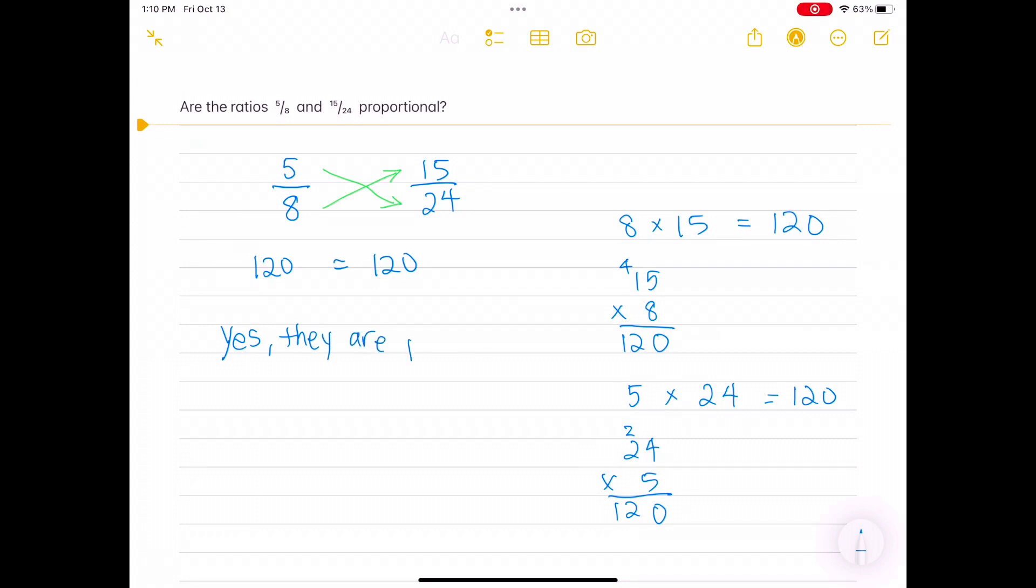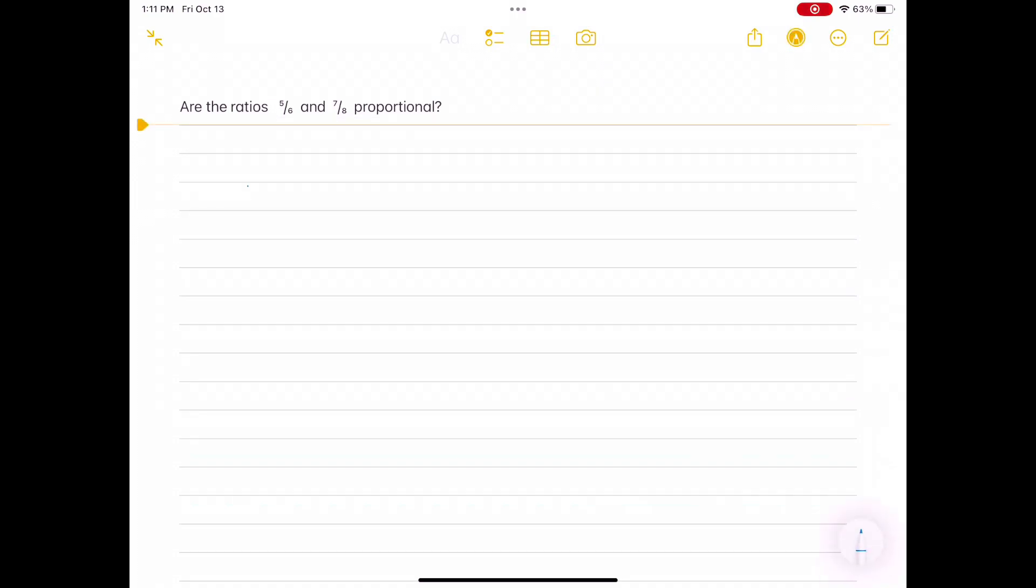Are the ratios 5 sixths and 7 eighths proportional? First we write down 5 sixths and 7 eighths, and then we cross-multiply. 6 times 7, does that equal 5 times 8? 6 times 7 equals 42, and 5 times 8 equals 40. Since 42 does not equal 40, therefore 5 sixths and 7 eighths are not proportional.